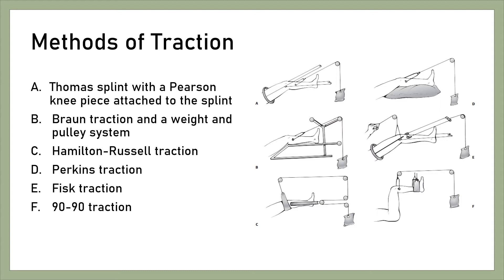The last type is 90-90 Traction. In this method, the thigh is pulled upward and both hip and knee are at 90 degrees. The advantage of this method is that gravity does not cause posterior sag of the femoral fragments.